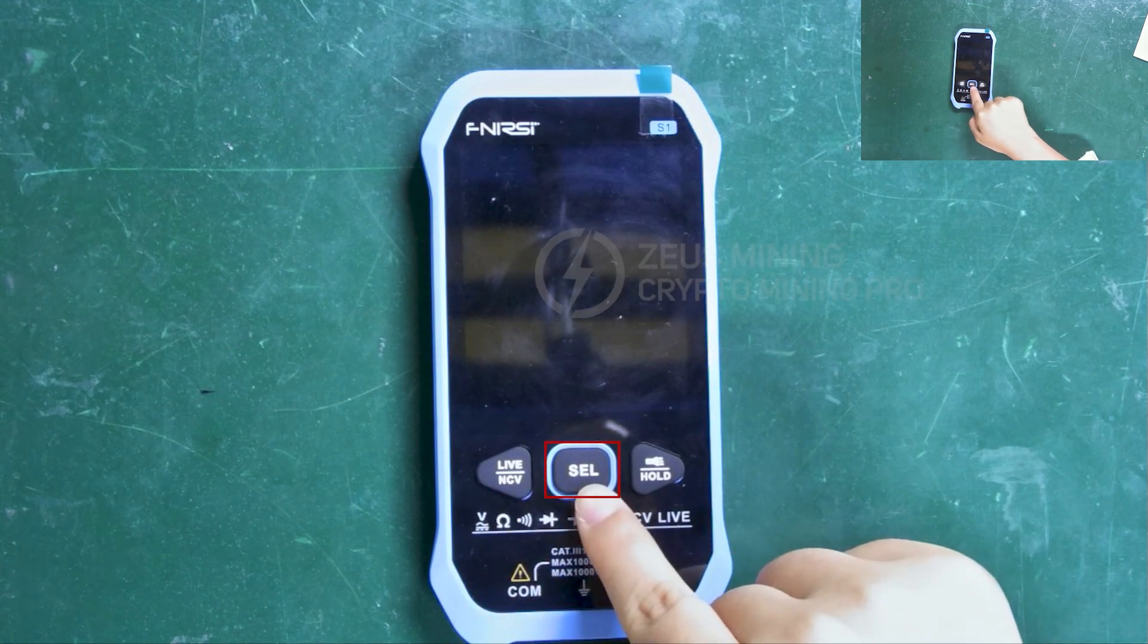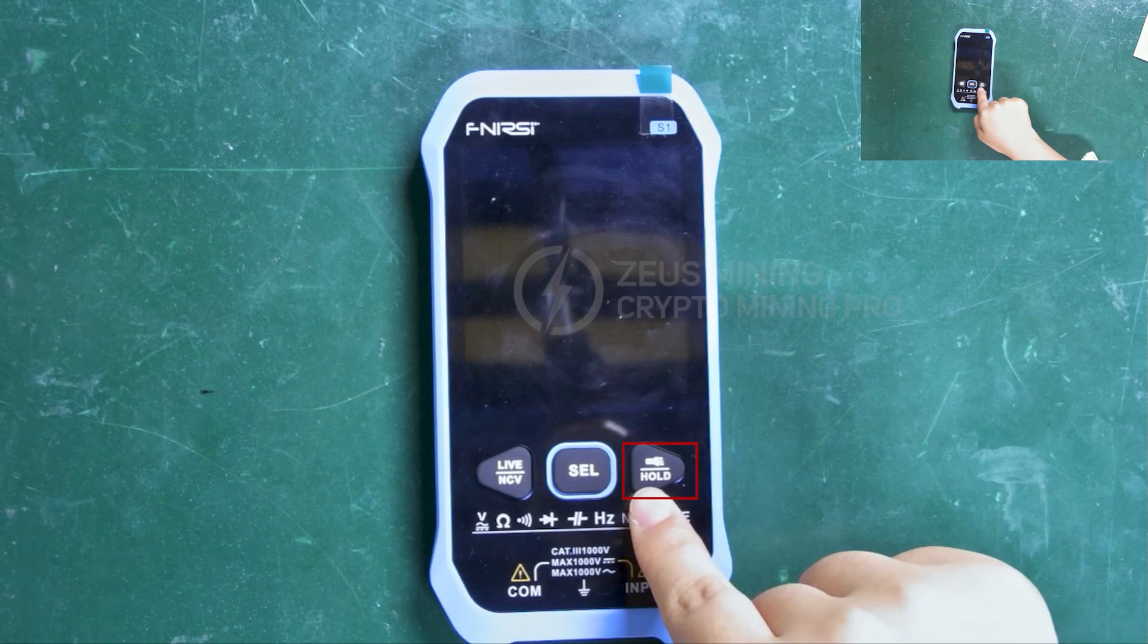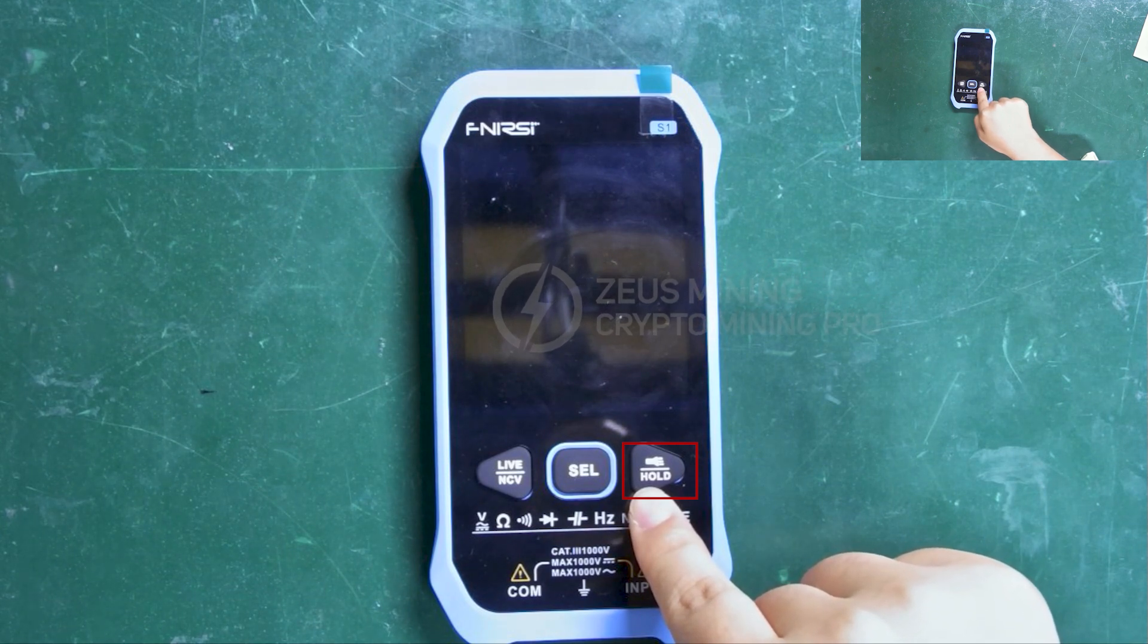The SEL in the middle is a button for switching between functions, and on the right, HOLD keeps the displayed data. A long press turns on the flashlight mode.